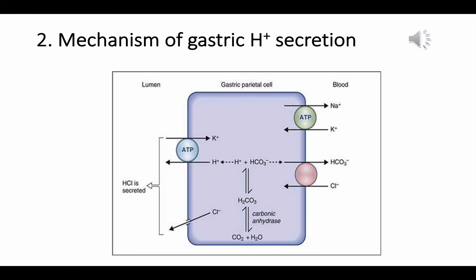Mechanism of gastric acid secretion: parietal cells secrete HCl into the lumen of the stomach and concurrently absorb HCO3 into the bloodstream. In the parietal cell, CO2 and H2O are converted to H+ and HCO3, catalyzed by carbonic anhydrase. H+ is secreted into the lumen by the hydrogen-potassium ATPase pump, and chloride is secreted along with hydrogen, so the secretion product of the parietal cell is HCl.